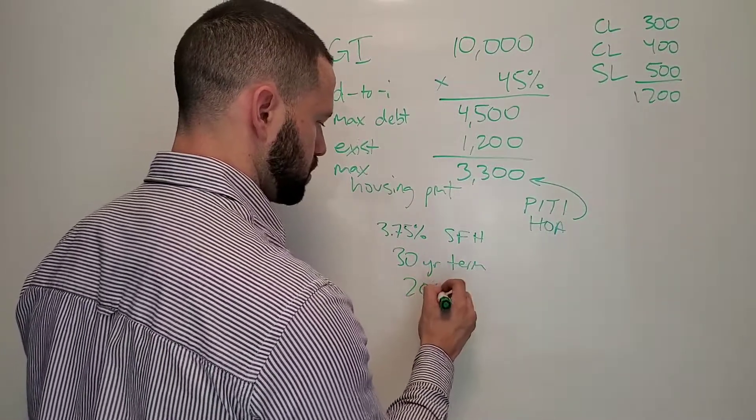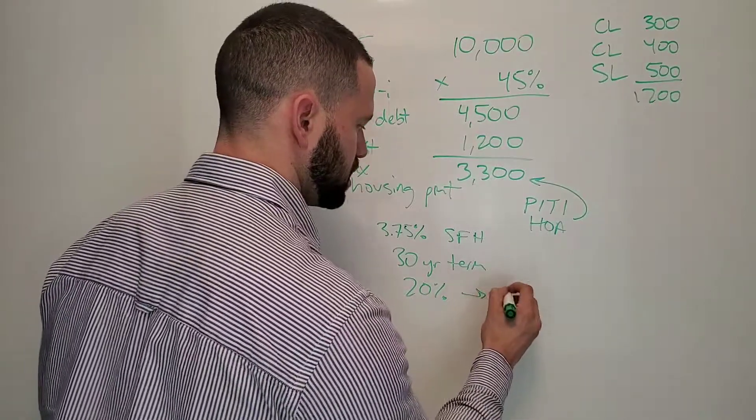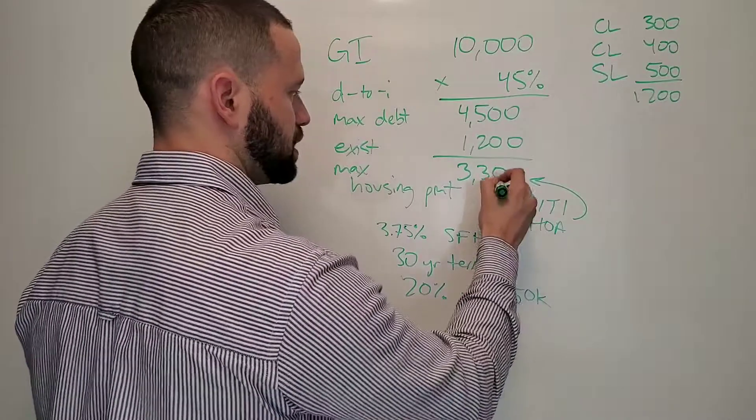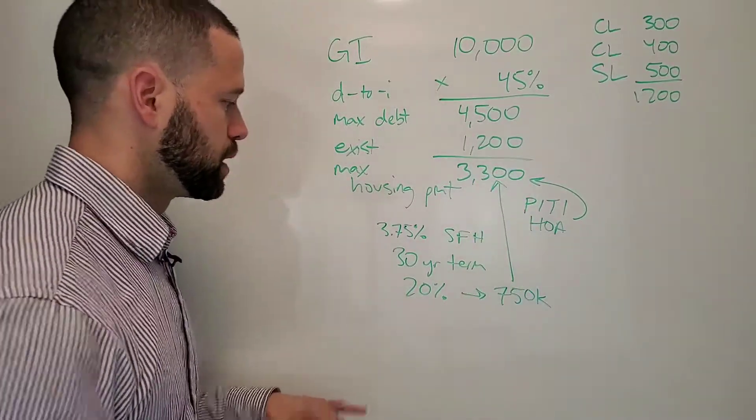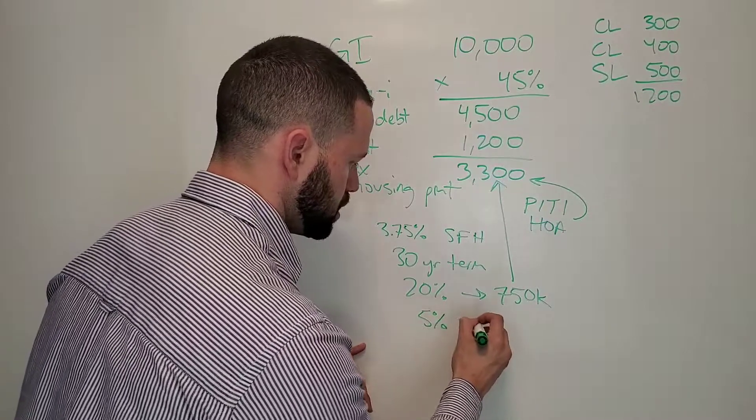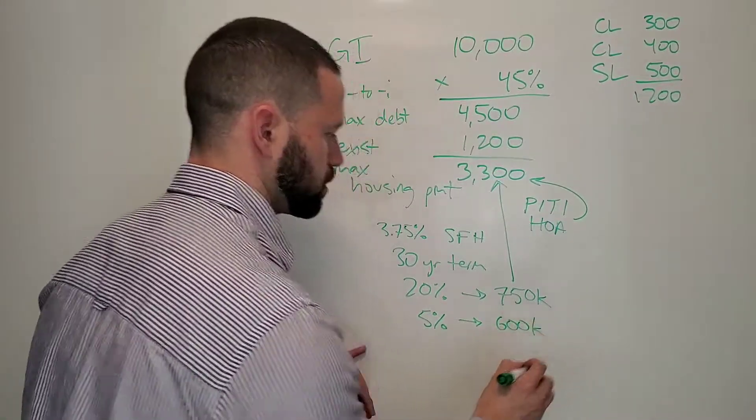If you have 20% down, then you're going to be in the $750,000 price range, and you're going to be able to fit into that monthly payment. If you have the same assumptions, except you only have 5% down, you're going to be looking at a $600,000 house.